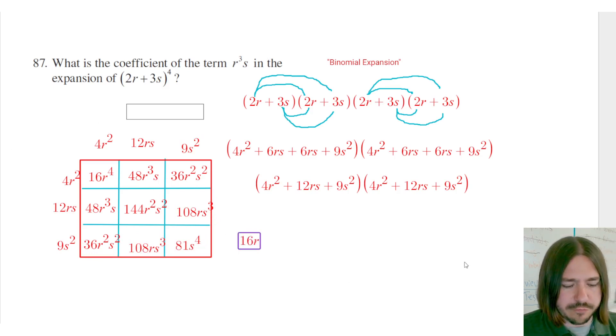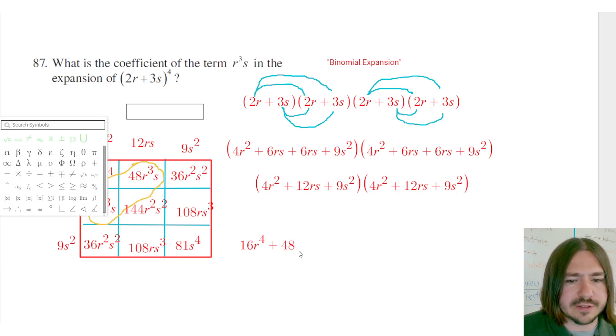it would be 16r to the fourth plus two of these 48r cubed s's. Let me kind of highlight those so you can see where I'm looking at. I've got these two are like terms. So 48 plus 48 is going to be 96. And you can double check that in the calculator.